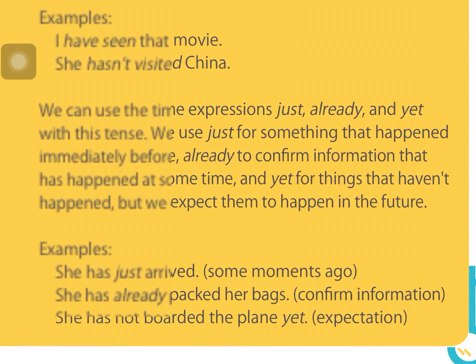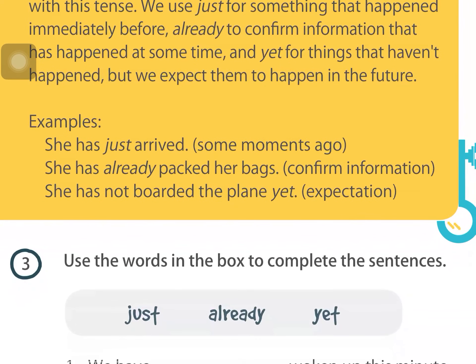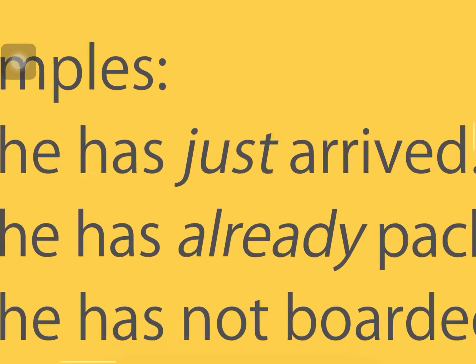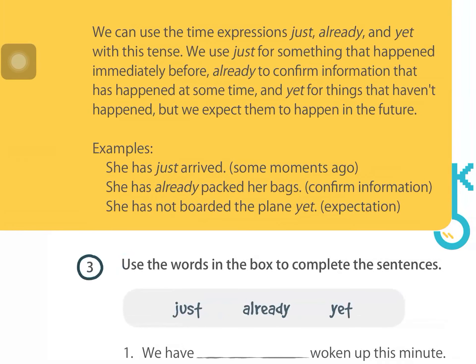We can use the time expressions 'just,' 'already,' and 'yet' with this tense. We use 'just' for something that happened immediately before — a few moments ago. For example: 'She has just arrived' means it happened some minutes ago.